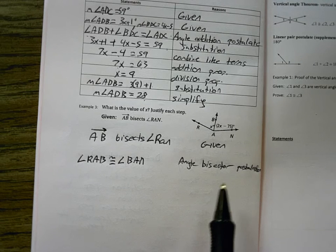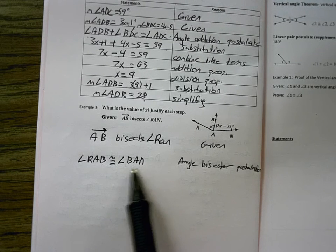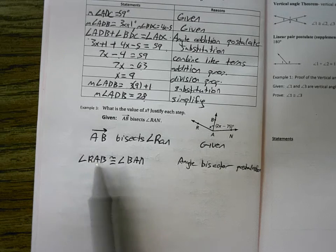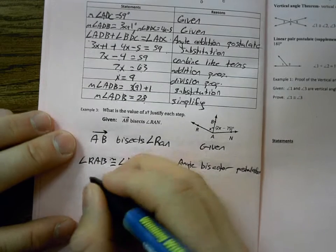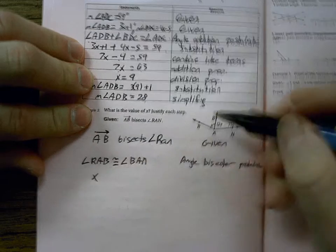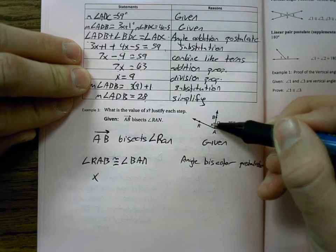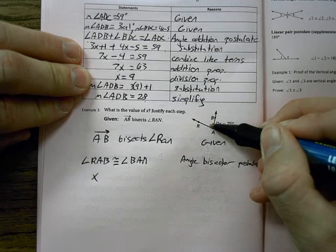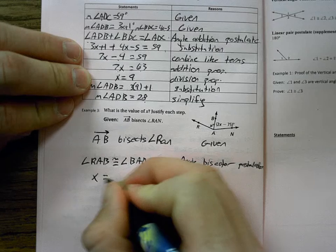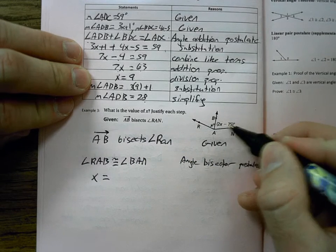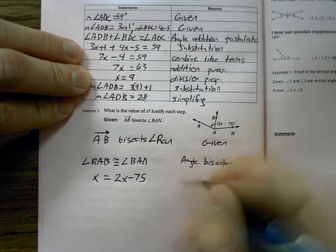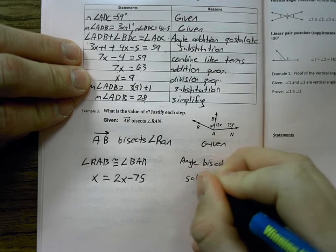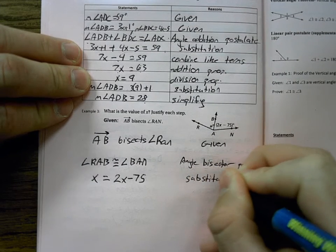Now Sierra, what can I do with this to get to that? Substitute it. So if you're confused, RAB is X degrees right there. So I can replace it. So X equals 2X minus 75. And this was because of substitution.